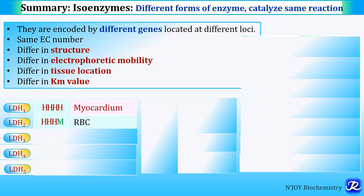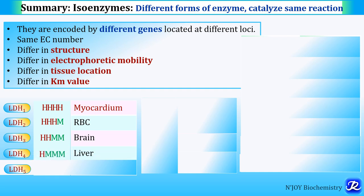LDH5 is M4, present in skeletal muscle. Normally, LDH2 concentration is more than LDH1. But in myocardial infarction, LDH1 increases compared to LDH2 — the pattern is reversed — and this is called the flipped pattern.